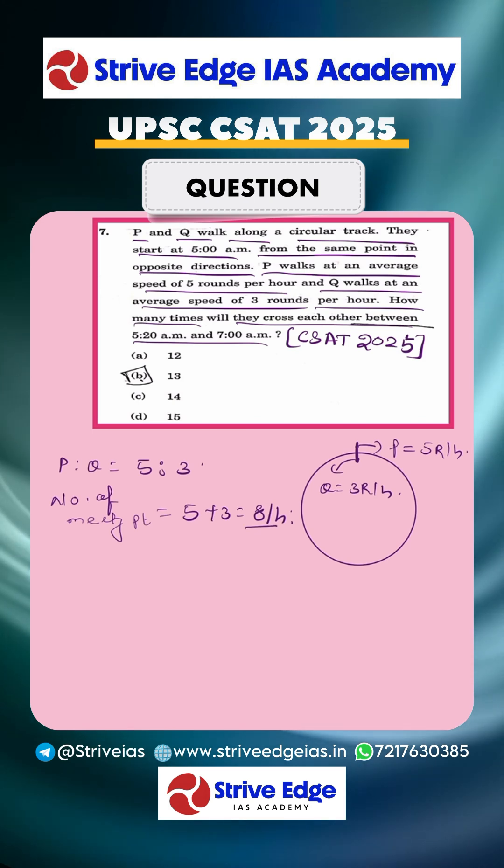The number of meetings is 8 per hour. So now, our traveling period is 5:20 to 7:00 a.m. I can divide this duration as 5:20 to 6:20. So in one hour, number of meeting points is 8.